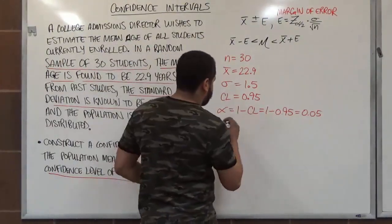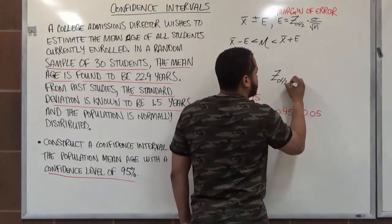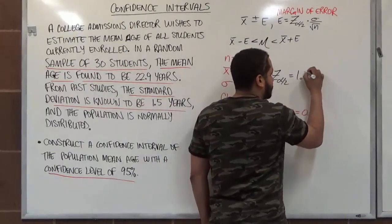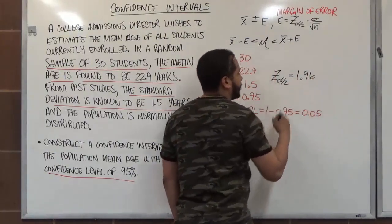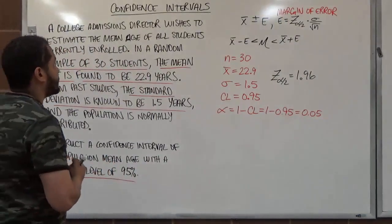And the critical value for that common value for the z of alpha divided by 2 for 0.95 is 1.96. This is the common critical value for 95% confidence level.